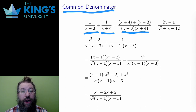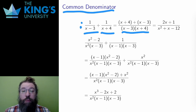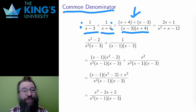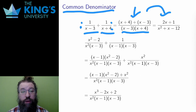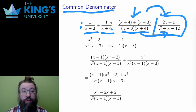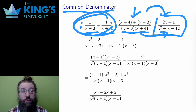To make a common denominator, I multiply both top and bottom of the first fraction by x plus 4, and both top and bottom of the second fraction by x minus 3. The resulting numerator is x plus 4 plus x minus 3, which simplifies down to 2x plus 1. I can multiply out the denominator to get 2x plus 1 over x squared plus x minus 12. And this is the result of the addition of the two individual fractions.